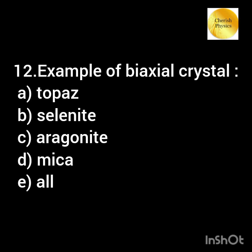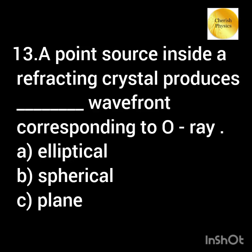Which of the following is the example of a biaxial crystal? A point source inside a refracting crystal produces dash wavefront corresponding to the ordinary ray. A point source inside a refracting crystal produces dash wavefront corresponding to the extraordinary ray.